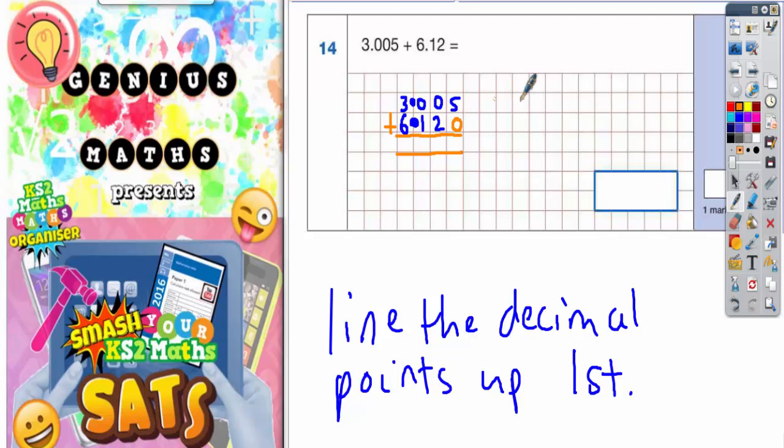Now everything's lined up and we're ready to start. 5 + 0—remember always start with the units column—5 + 0 is 5, 0 + 2 is 2, 0 + 1 is 1, and 3 + 6 is 9.